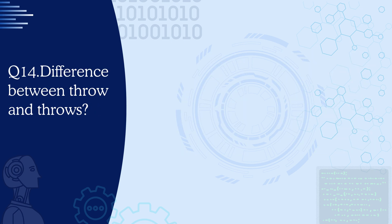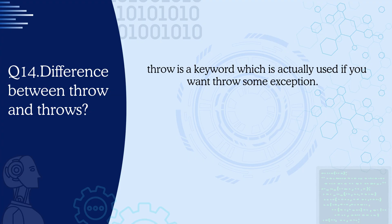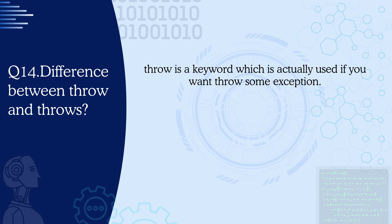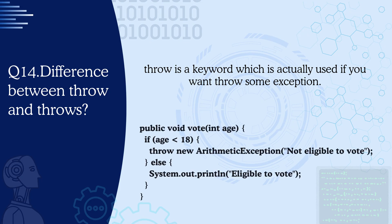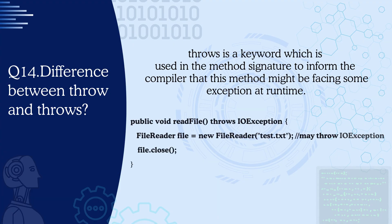Question 14: What is the difference between throw and throws? Throw is a keyword which is used to actually throw some exception — it is used inside a method. On the contrary, throws is a keyword used in the method signature to inform the compiler that this method might face some exception at runtime.